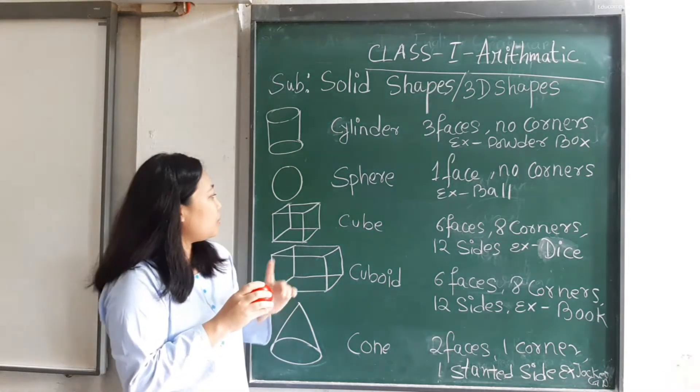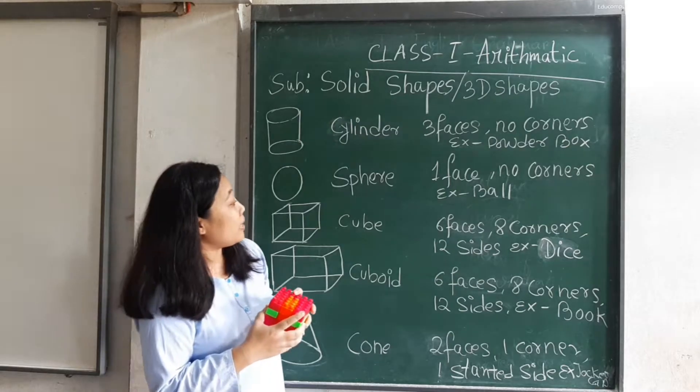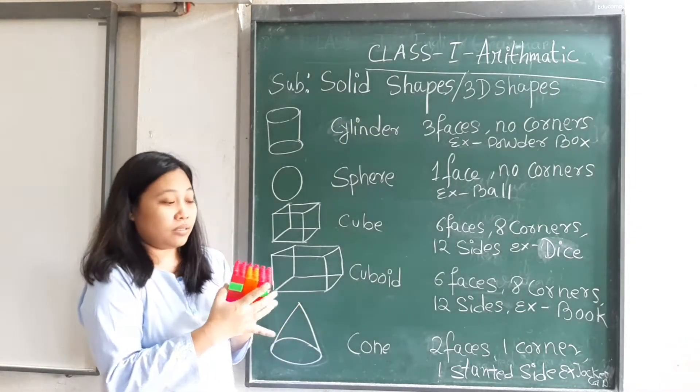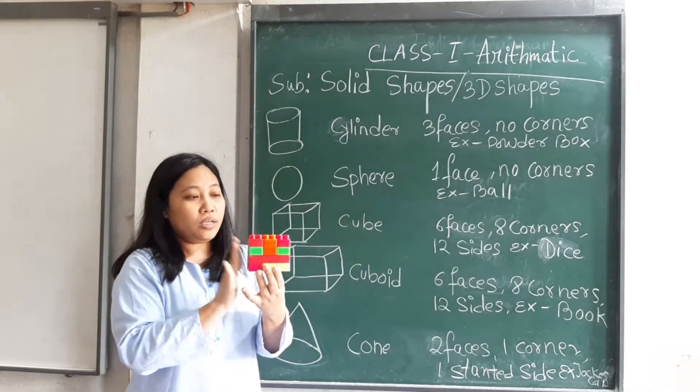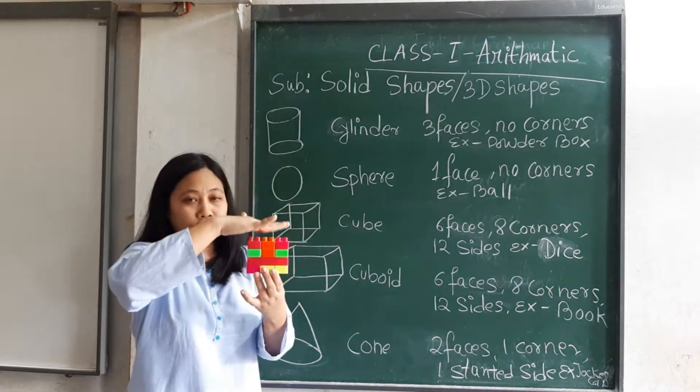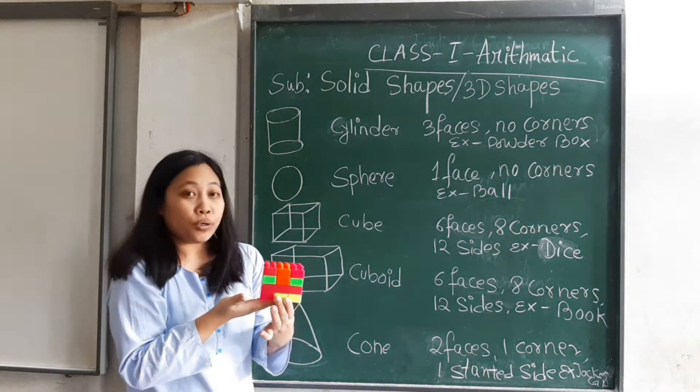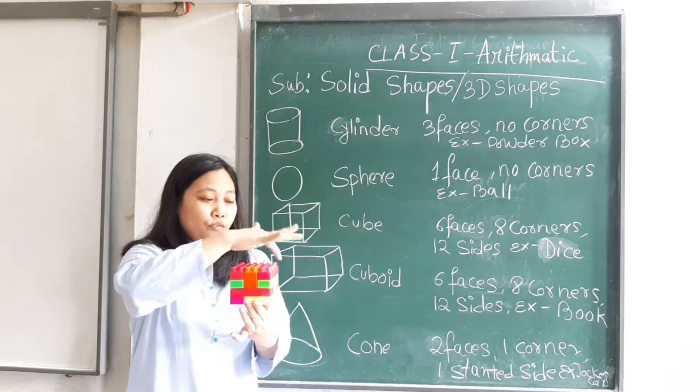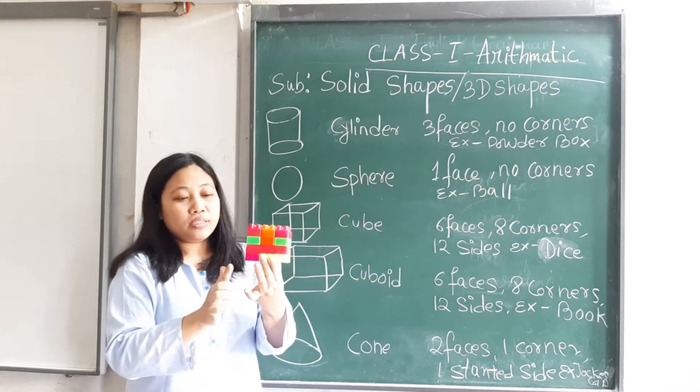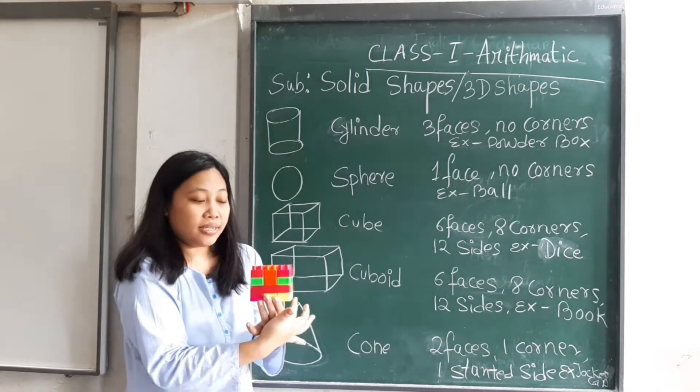Okay, there comes cube. A cube has six faces: one, two, three, four, five, six. And eight corners: one, two, three, four, five, six, seven, eight.